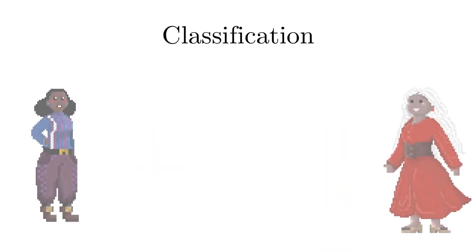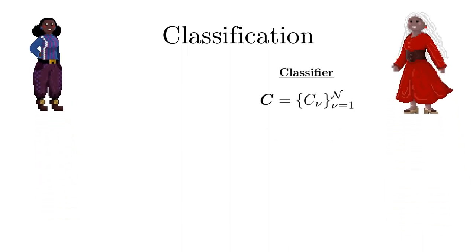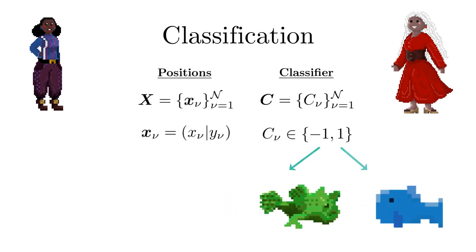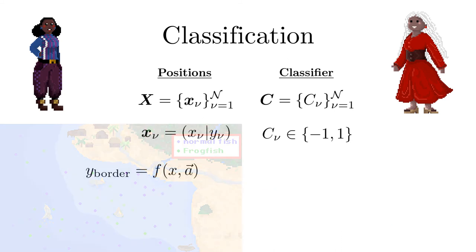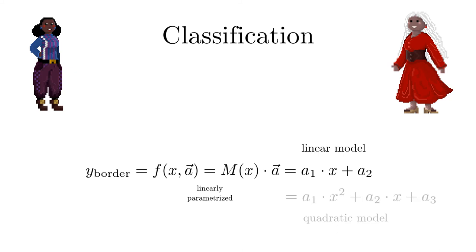Now we turn to the classification problem. Given the classification labels for the two species of fish and their positions, the goal is to find the border between the fish reserves which shall be described by a linear function. The function depends on some parameters A. Here M defines the model or rather the set of ansatz functions. For instance, we can have a linear model or a quadratic model.